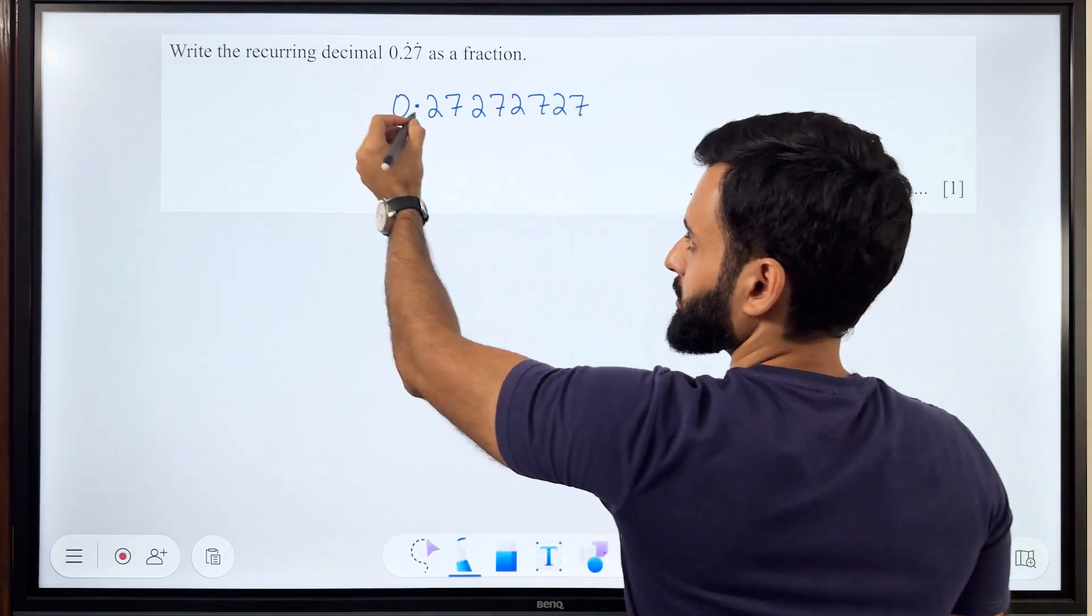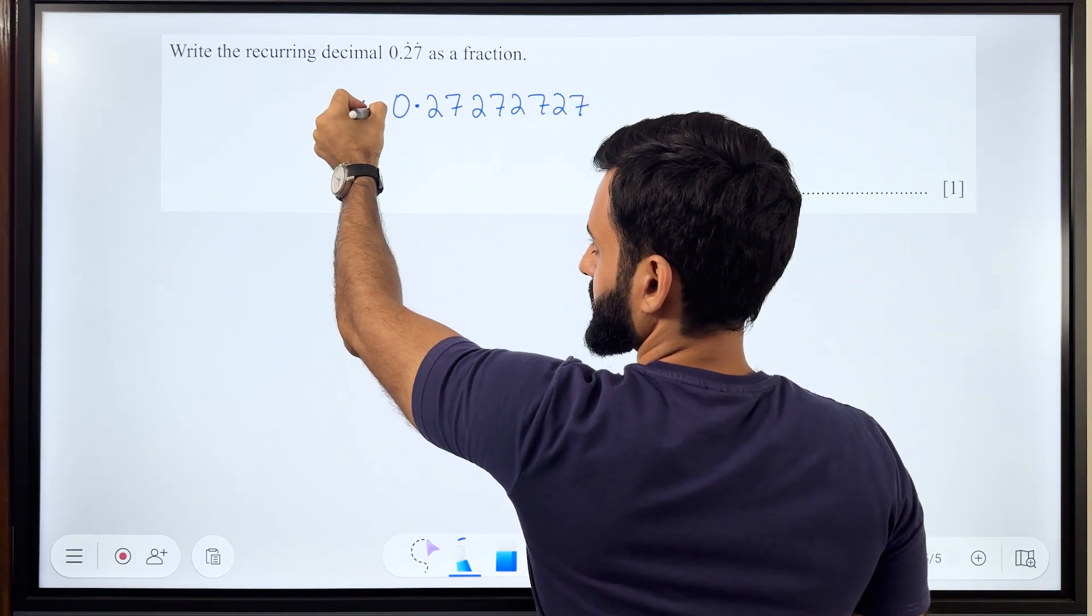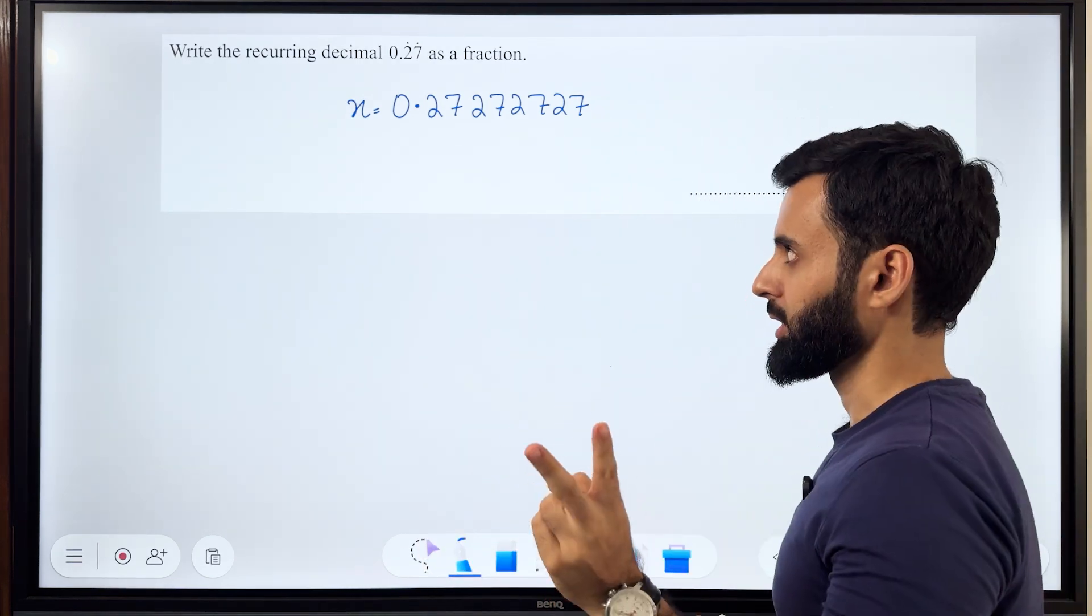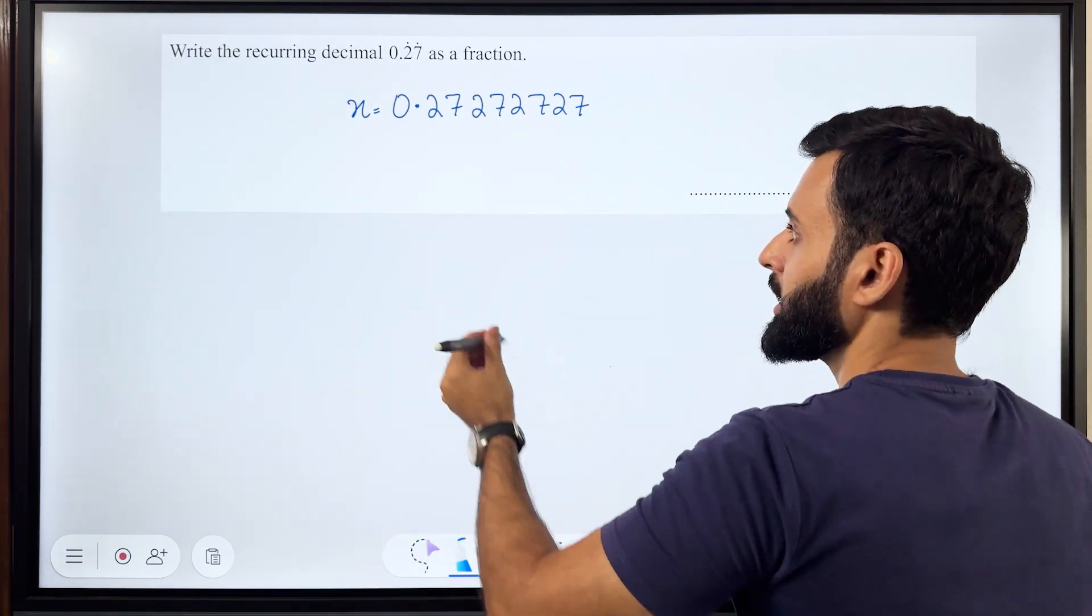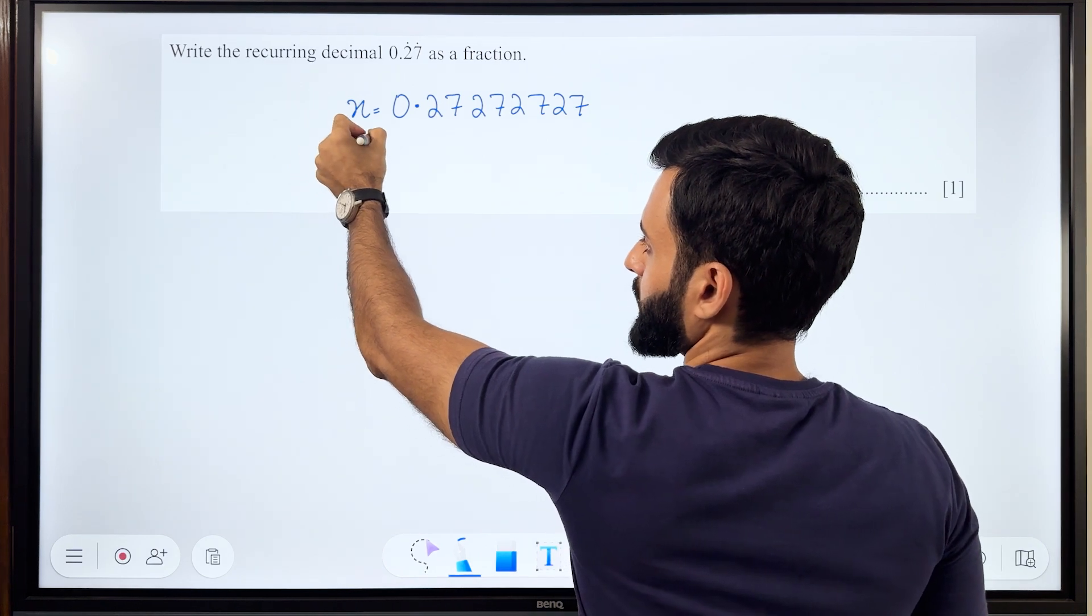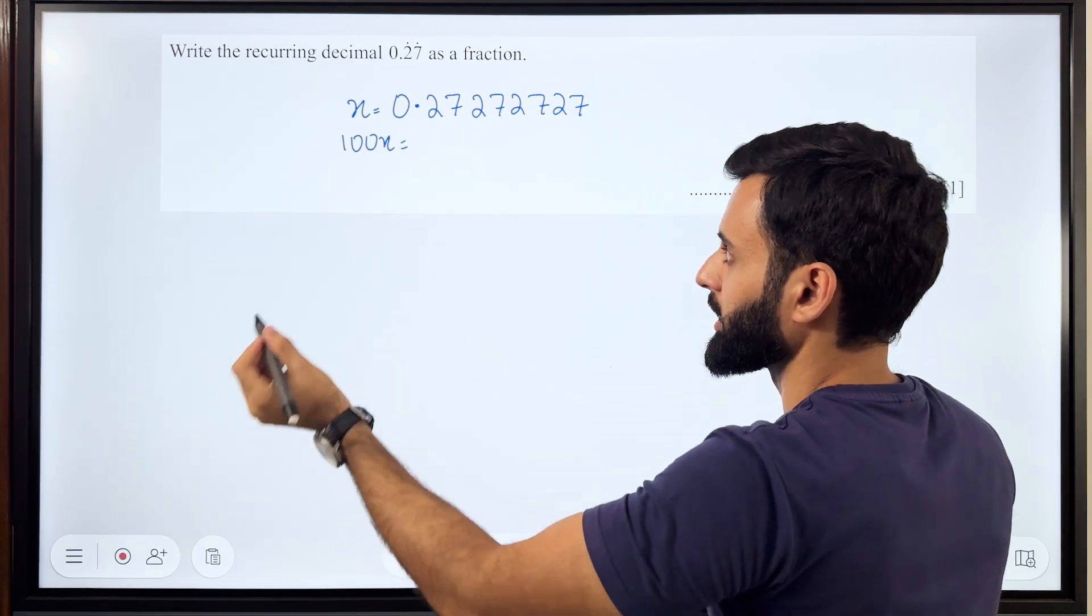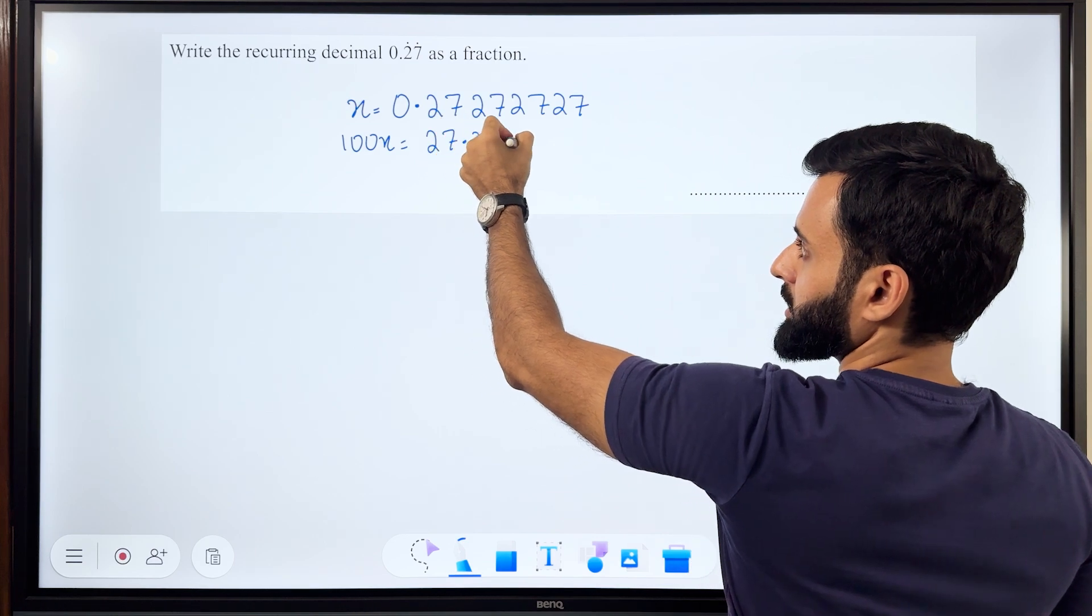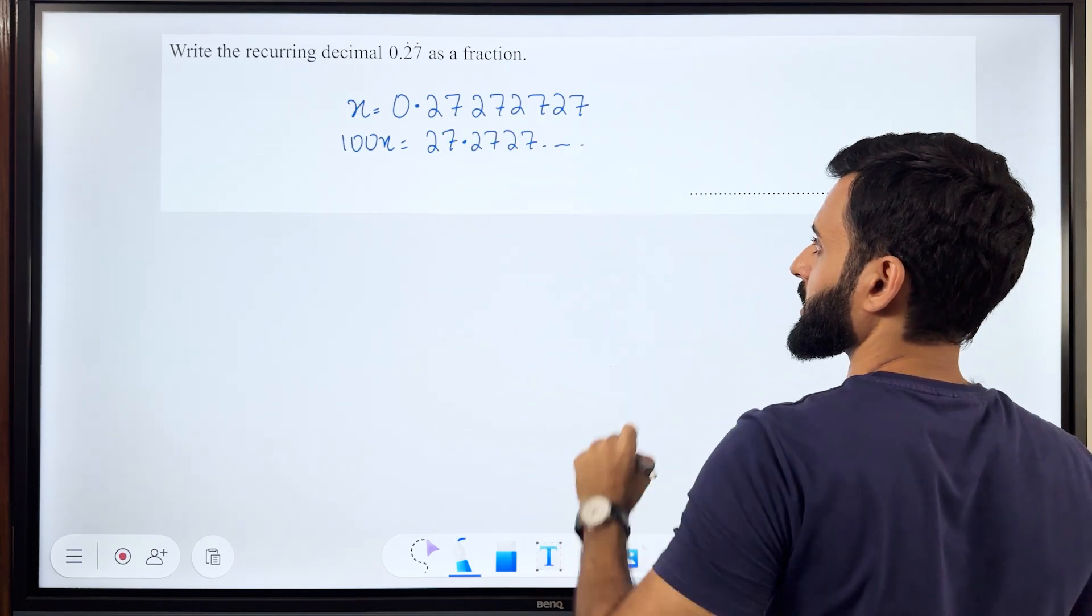So remember this pattern will continue forever. I'm going to call this x. Now since the recurring pattern is of two numbers, 2, 7, 2, 7, if I multiply x by 100, which is 100x, I will get 27.2727 and then the same pattern will continue.